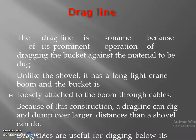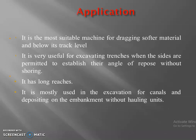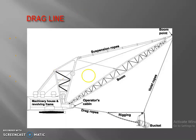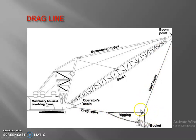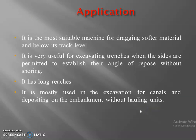Next coming to the dragline. As the name implies, dragging means pulling. In the dragline, it has a longer boom — the boom is like our hand. From that boom, the hoist rope and drag rope are there. With the help of these drag rope and hoist rope, the bucket can be moved here and there, so that all the materials can be dragged. This is used for softer materials, and it can deposit materials at some distance. So it is used in canals.